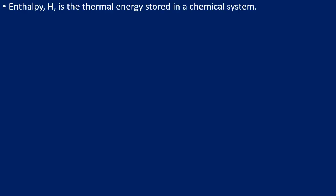Let's look at some key terms and definitions. Enthalpy is given the letter capital H, so wherever you see capital H that means enthalpy. Enthalpy is the thermal energy stored within a chemical system. The chemical system could be classed as the reactants in a reaction, so we could calculate the enthalpy of the reactants at the start, and then measure the enthalpy of the products at the end.